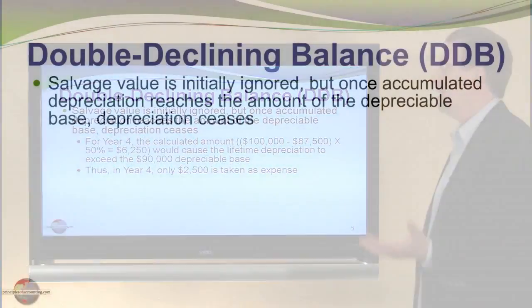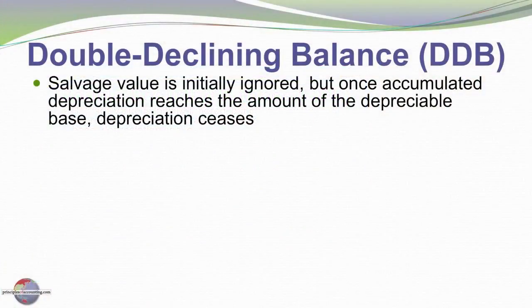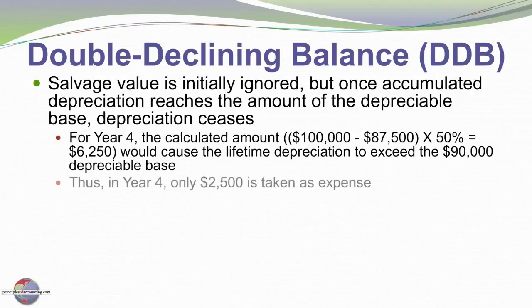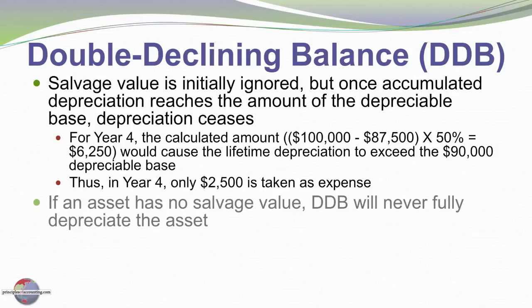Salvage value is initially ignored with double declining balance, but once accumulated depreciation reaches the amount of the depreciable base, depreciation ceases. For year four, the calculated amount of depreciation would be $6,250 — that is, $100,000 cost minus the previous accumulated depreciation times 50% — but that would cause total accumulated depreciation to exceed the $90,000 depreciable base. So we'll only book $2,500 of depreciation expense in the last year.